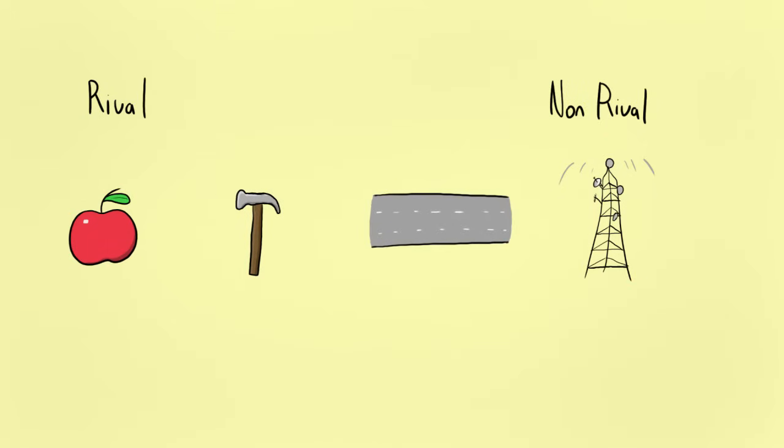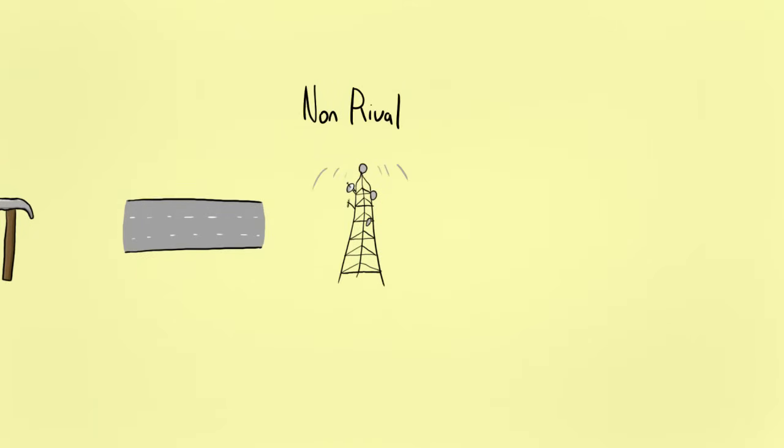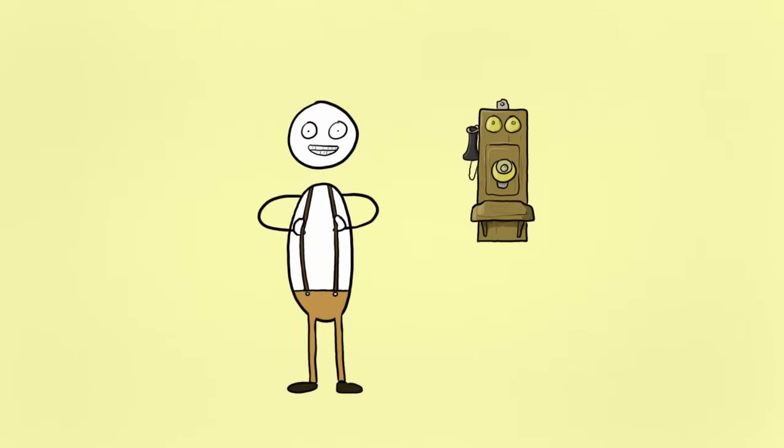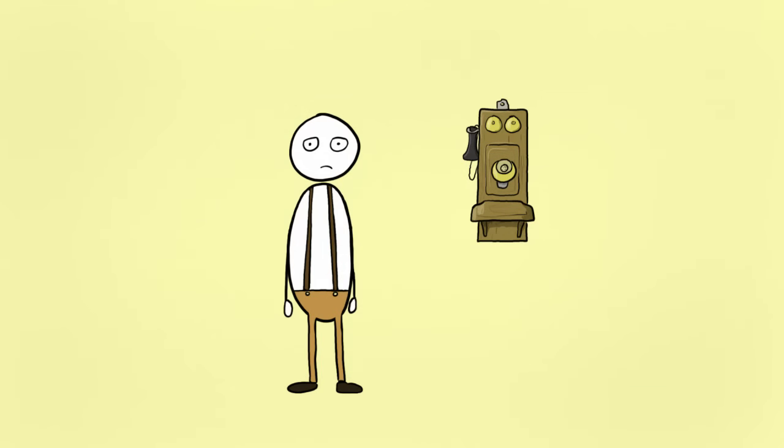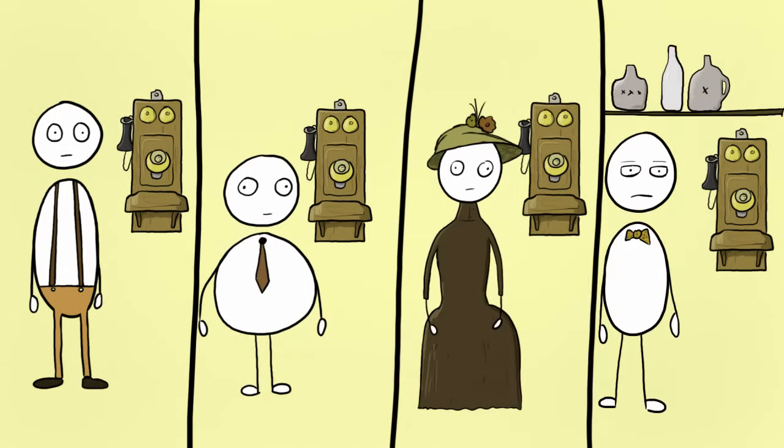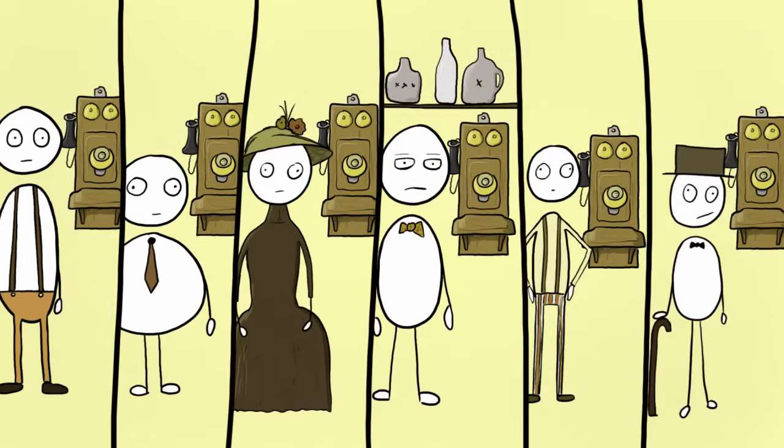You can kind of run with this rivalry model in the other direction. Is there anything that becomes more valuable as more people use it? You could look at using phones this way. If it's the 1870s and you're the only one with a phone, it has no value. But as more of your friends have phones and more shops and services have phones, your phone becomes more and more useful.